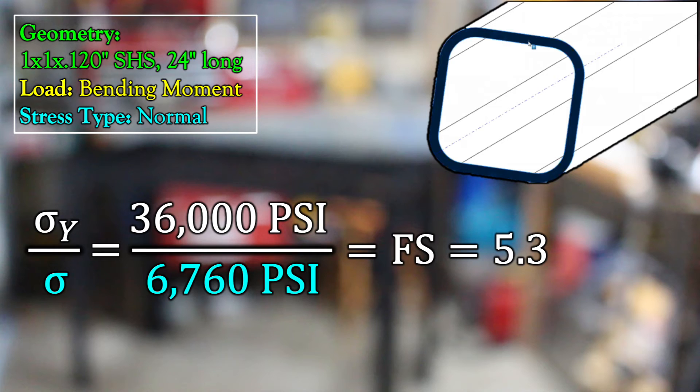I'm assuming this is A36 hot rolled steel. Nothing special about it, low strength steel. A36 is easy because you remember that 36 is its yield strength, 36 KSI or 36,000 PSI. Dividing our stress, 6760 PSI, into our yield strength, a material property, 36,000 PSI, we get the factor of safety, 5.3.